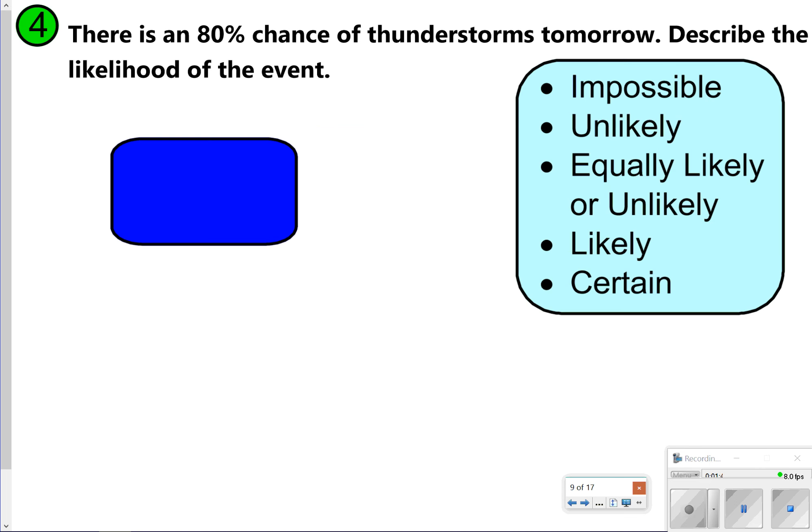Alright, so we're going to answer a few questions about how to find the probability. This one says there's an 80% chance of thunderstorms tomorrow. Describe the likelihood of the event. So what you're going to do now is go ahead and pause the video to see if you can determine the likelihood by using one of the five options and then click play when you're ready to check your work.